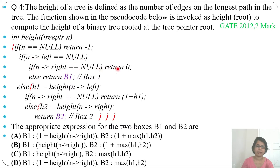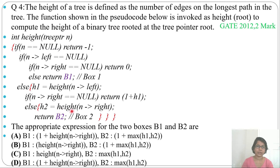So if right child is null return zero. The else here means there is some right child — left child is null but there is some right child. Then the outer else means left child is not null. In that case, h1 equals height(n.left), so h1 is the height of the left subtree. If n.right equals null, return one plus h1. Otherwise, h2 equals height(n.right), then return B2.